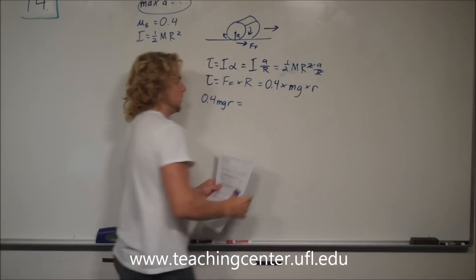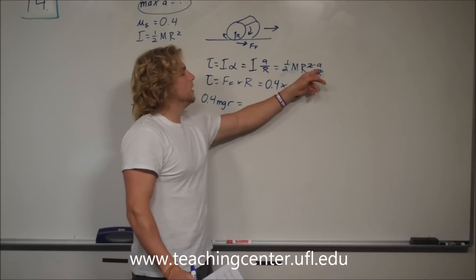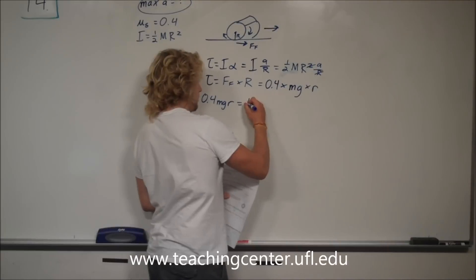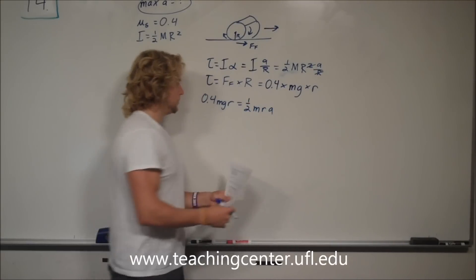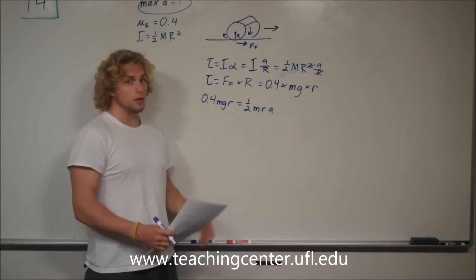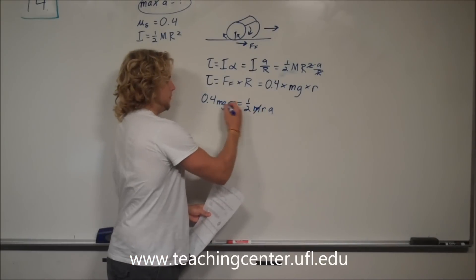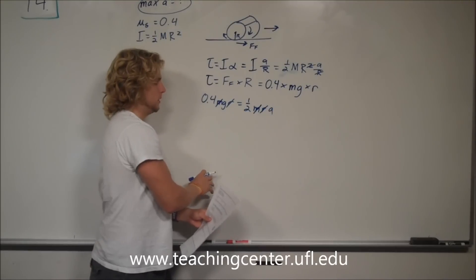One half mr squared a over r. Let's go ahead and cross those out to simplify it. So, now we have one half mr a. You can see that these equations, there's a lot to cross out, m, m, r, r.